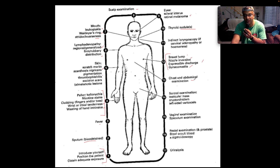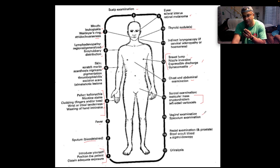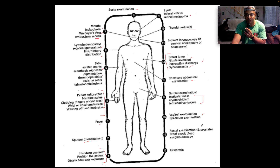You want to examine the abdomen, noting hepatomegaly, splenomegaly, and ascites. Scrotal examination for testicular mass, cryptorchidism, and a left-sided varicocele. Vaginal examination with a speculum. Then you want to do a rectal examination, especially if you have an elderly gentleman with features of urinary tract obstruction — hesitancy, poor stream, terminal dribbling — to assess the prostate. Check the stool for occult blood without a sigmoidoscopy, and lastly, urinalysis.